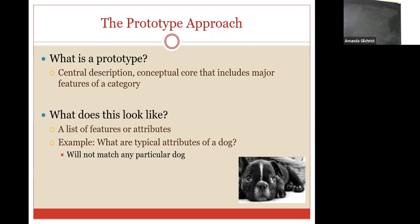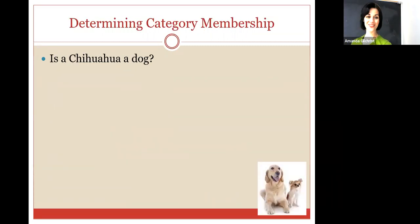But more typical members are going to be closer to that prototype than atypical members. So, for example, a chihuahua. A chihuahua is definitely not the prototype. Likewise, a Great Dane, a Great Pyrenees, big, giant, horse-sized dogs. Not going to fit the prototype. A basset hound. Definitely not going to fit the prototype. It's got tiny little legs and long, long ears. Or a dachshund, for that matter.